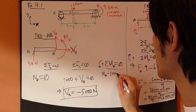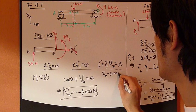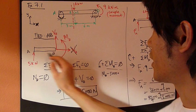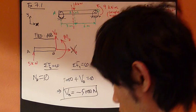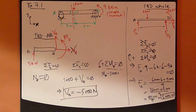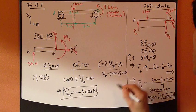5,000 newton times moment arm, which is the length of AB, which is 3 meters. So 3 equals 0.